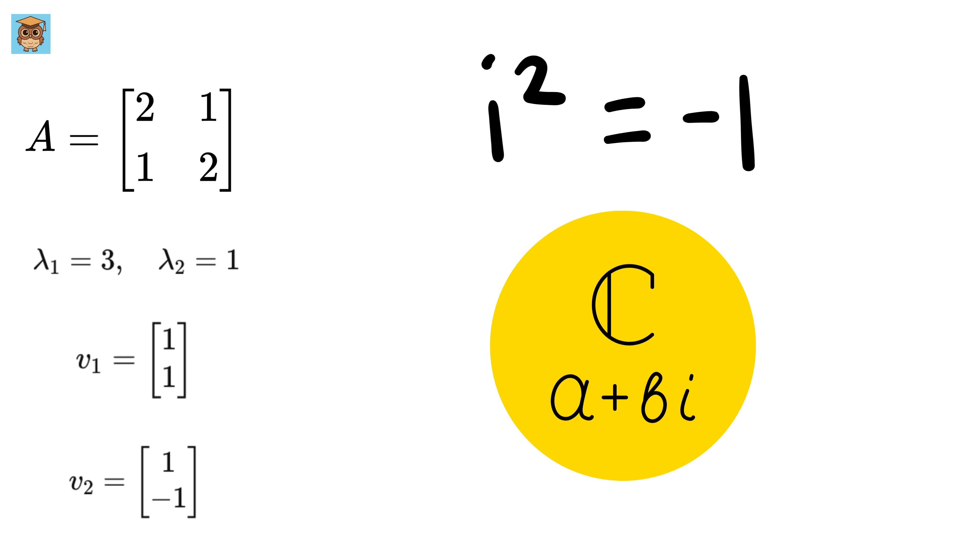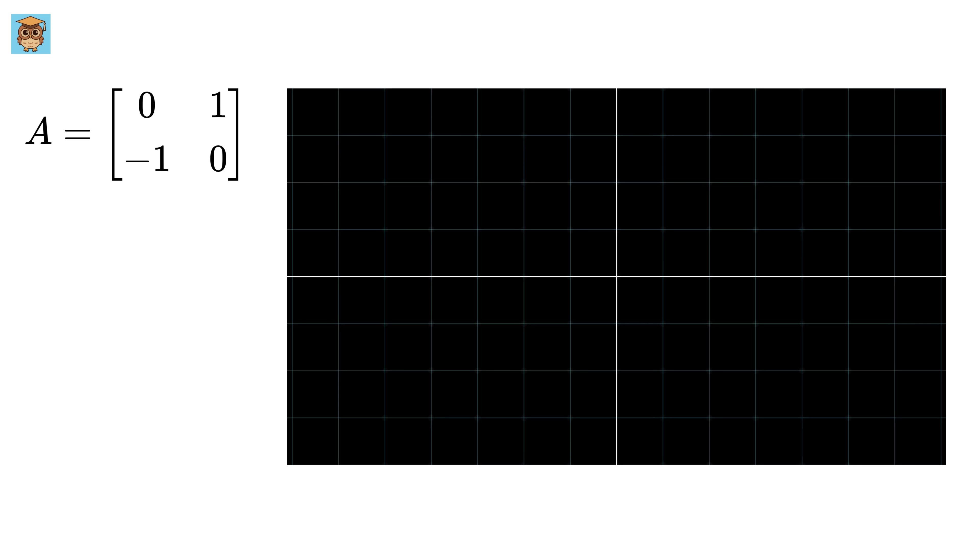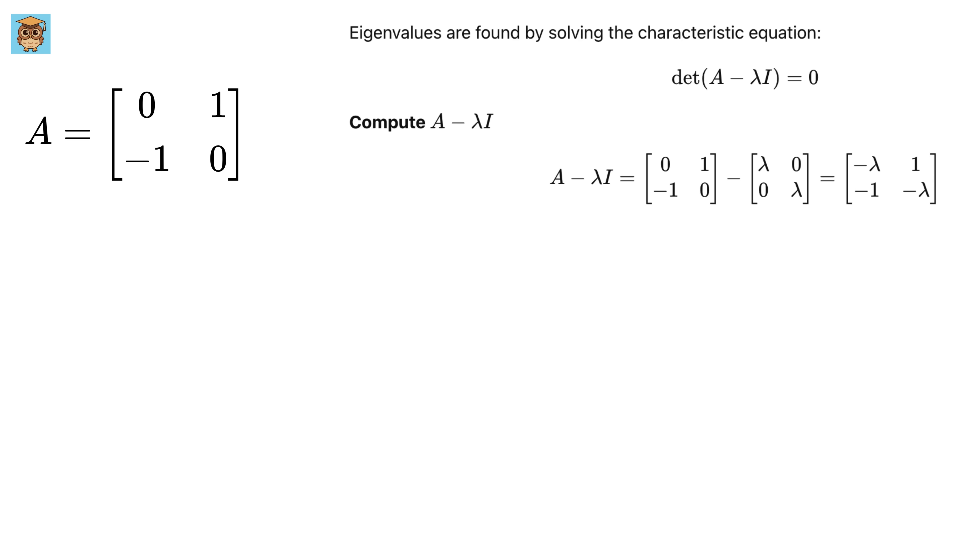But sometimes it can happen that no real number satisfies the eigenvalue equation. What does that mean? Imagine this matrix and let us transform all of these points. If you observe clearly, this matrix rotates every vector by 90 degrees counterclockwise. Nothing is stretching or shrinking along any fixed direction. If we try to find eigenvalues, we end up with an equation that says x times x plus 1 is equal to 0.